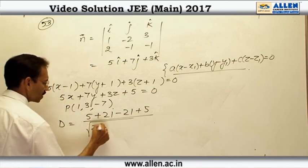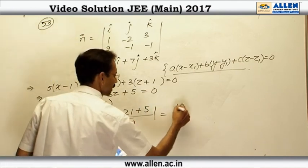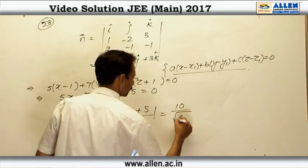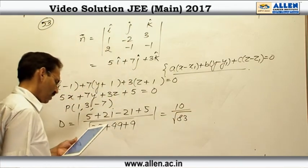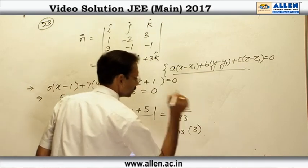This comes to be 10 over square root of 83, and this is the third option. That is why the correct answer is 3.